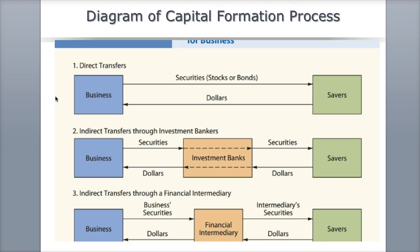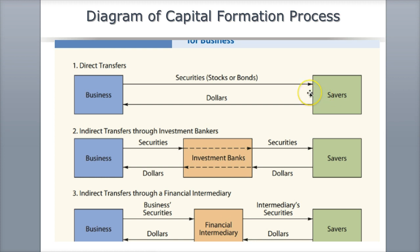Looking at this chart, we have savers and we have businesses. In the direct transfer, shown in the top section, a business sells stocks and bonds directly to savers. Through dividend reinvestment programs and certain corporate websites, you can buy stocks and bonds directly from a business. But this is less common because of the hassle of paperwork, taxes, and most people find it a little clunky.